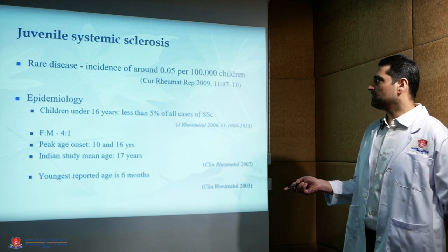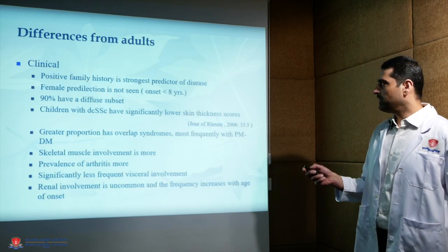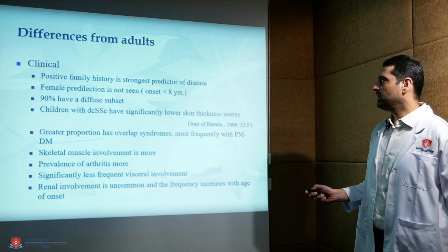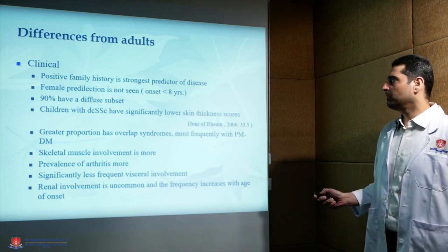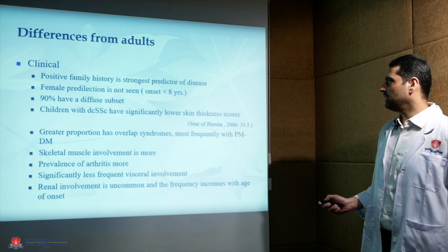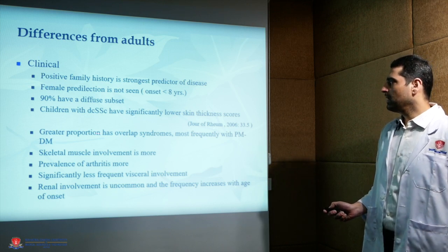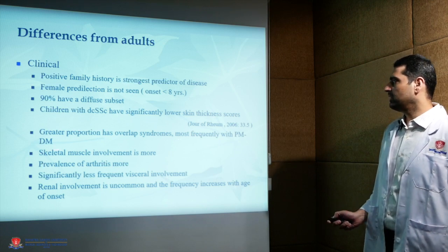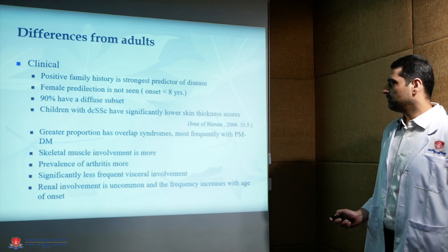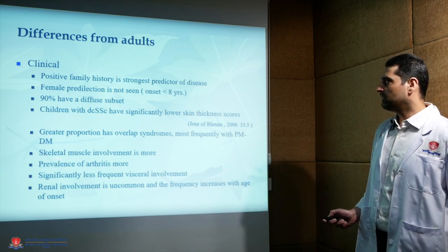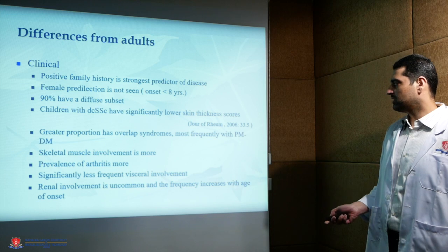Juvenile systemic sclerosis differs from the adult form. Differences include positive family history, and female predilection not seen below 8 years. 90% of patients have the diffuse subset, though children with diffuse cutaneous variant have significantly lower skin thickness scores. A greater proportion has overlap syndromes, most frequently with polymyositis and dermatomyositis. Skeletal muscle involvement and prevalence of arthritis are greater, so musculoskeletal manifestations are more common, while visceral involvement and renal involvement are less common.